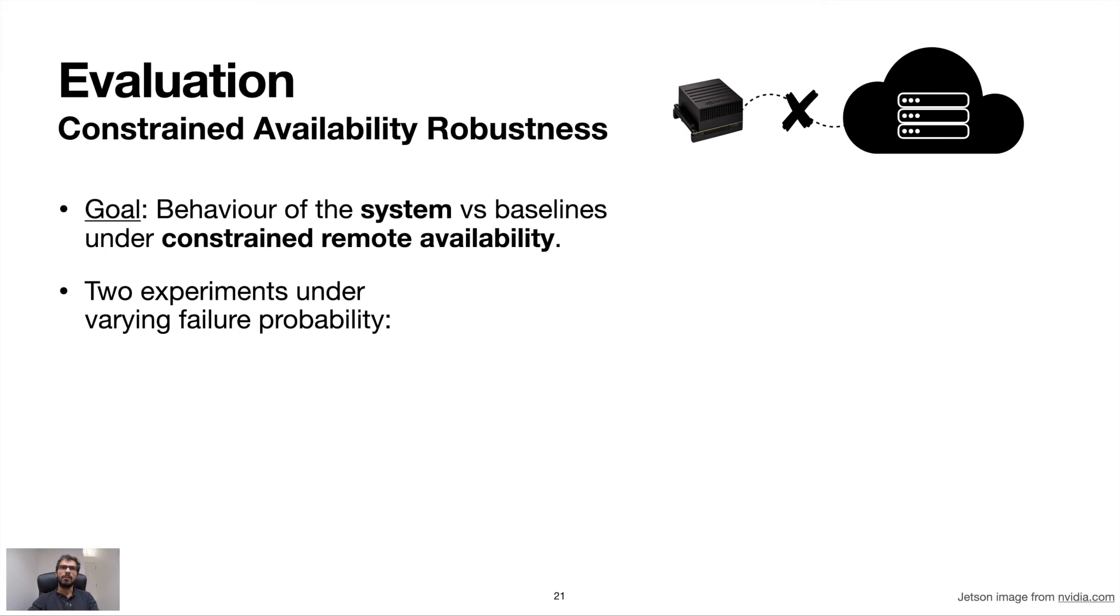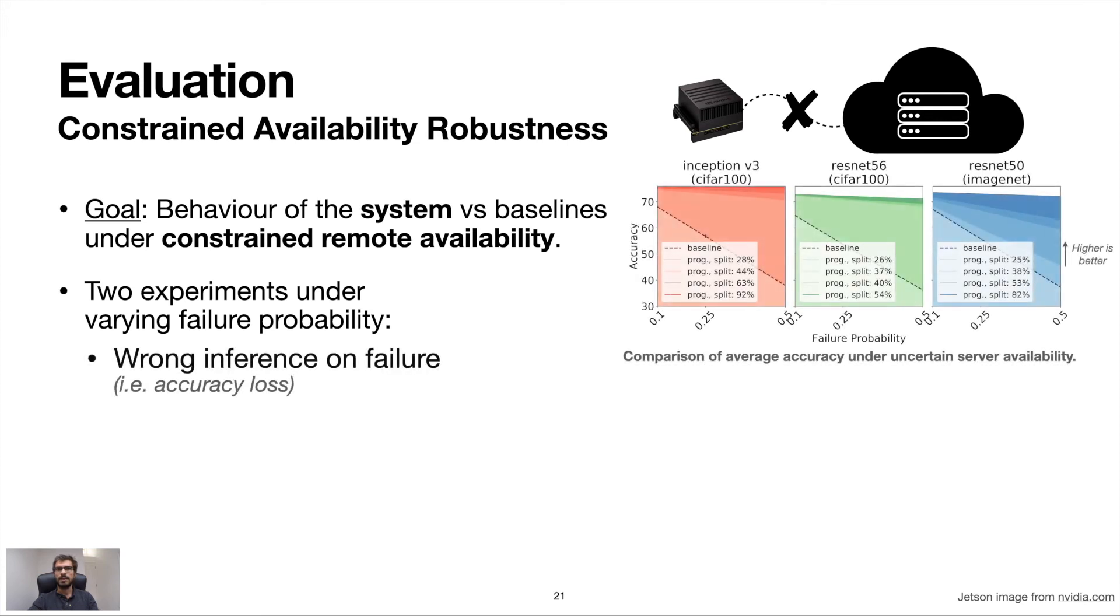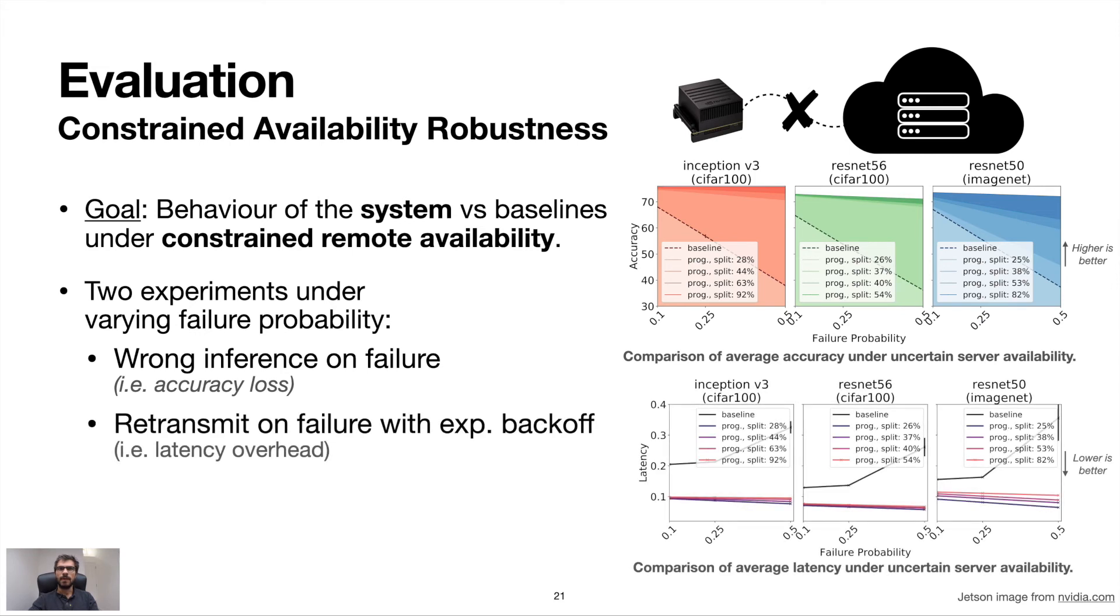Next, we evaluated the robustness of our system to remote end disconnections. Specifically, we analyzed two setups, one failing the input sample inference upon remote disconnection, while the other is attempting to retransmit on failure with exponential back-off. Hence, remote unavailability in the first case results in accuracy degradation, while in the second, it translates to increased latency due to retransmission. For our experiments, we conduct inference on the validation set of CIFAR-100 and ImageNet over three different networks and sample from the distribution of varying failure probability.